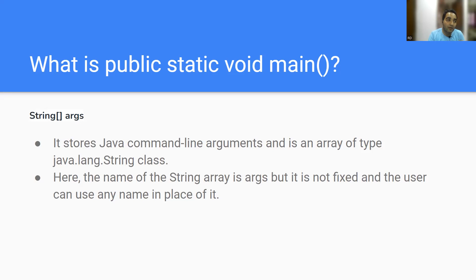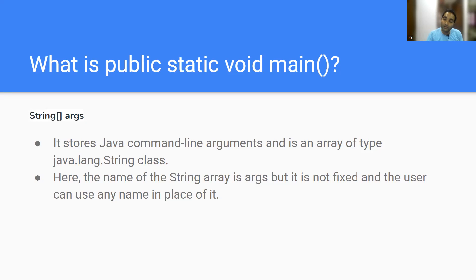Whenever you write the main method, this is the format to follow — just as when you write your name, there is a structure: first name, then father's name, then last name, or it varies by custom on different identity cards. Similarly, public static void main(String args) is the standard way to write the main method in Java.